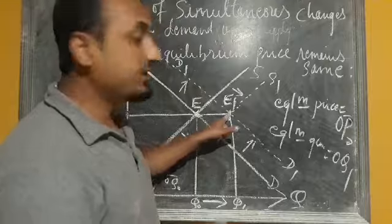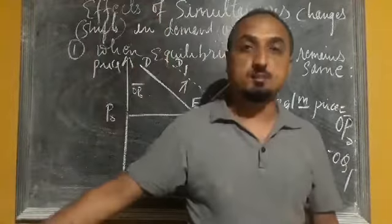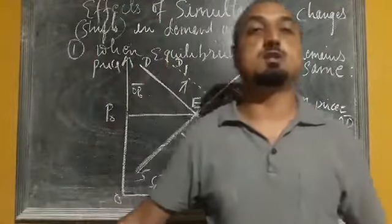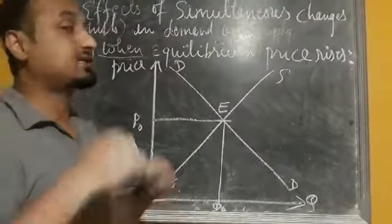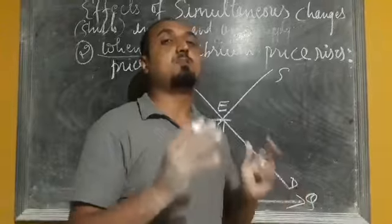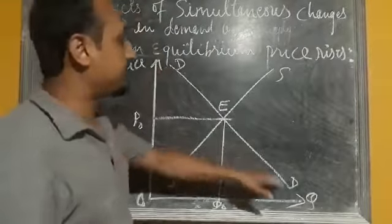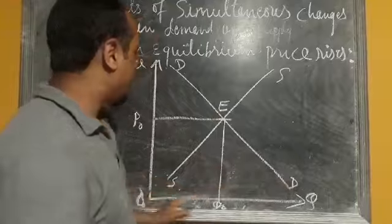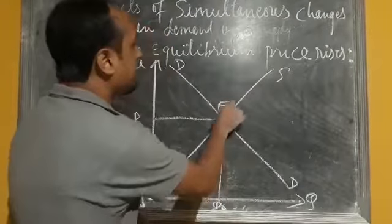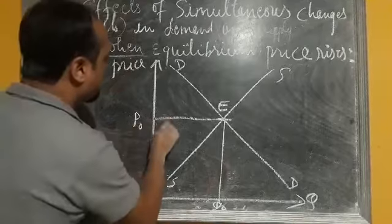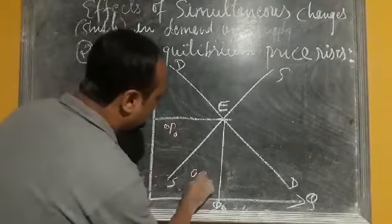So here the equilibrium point is changing and equilibrium quantity is changing, but price remains the same. This is the first case. Now we are going to discuss the second case — when demand and supply change simultaneously. The initial demand curve is DD and initial supply is SS, with equilibrium point E, equilibrium price OP0, and equilibrium quantity OQ0.